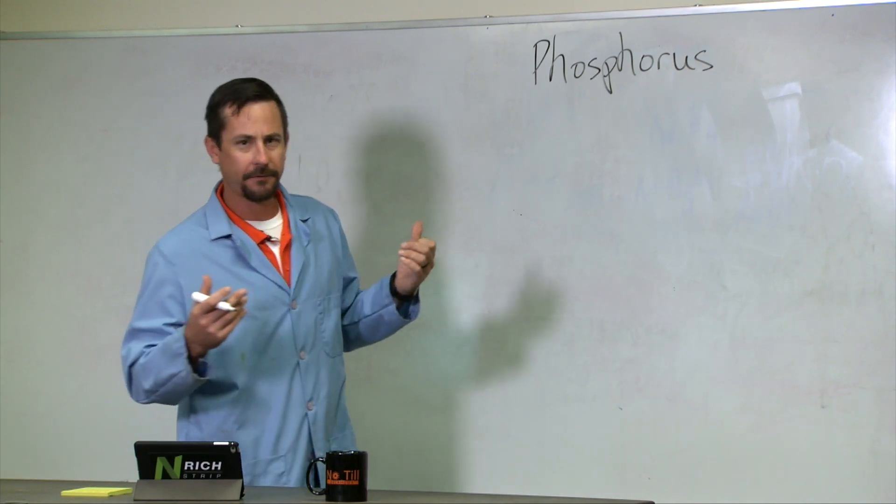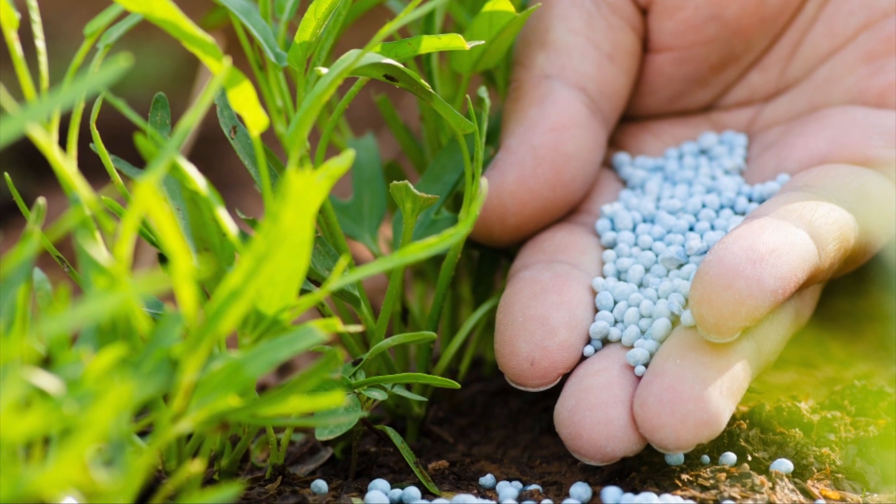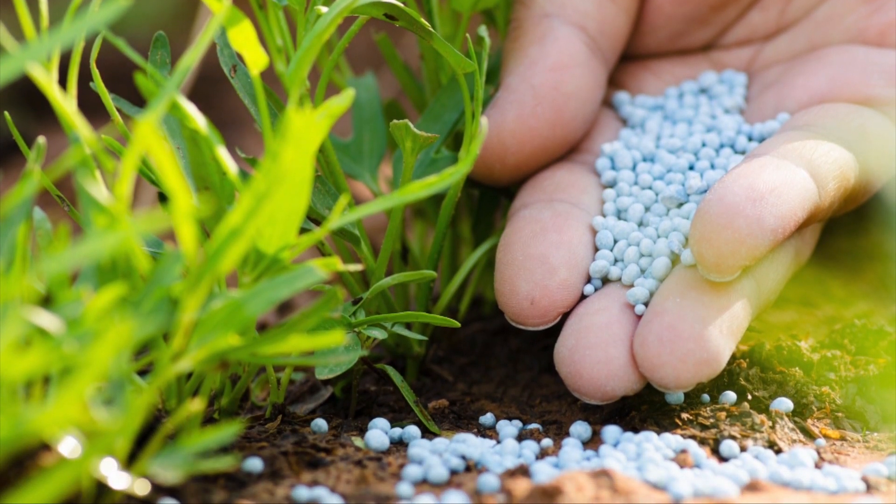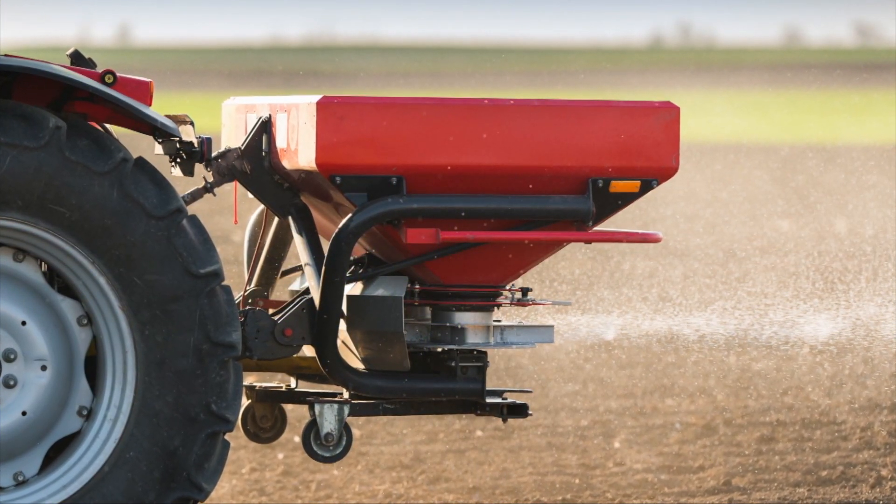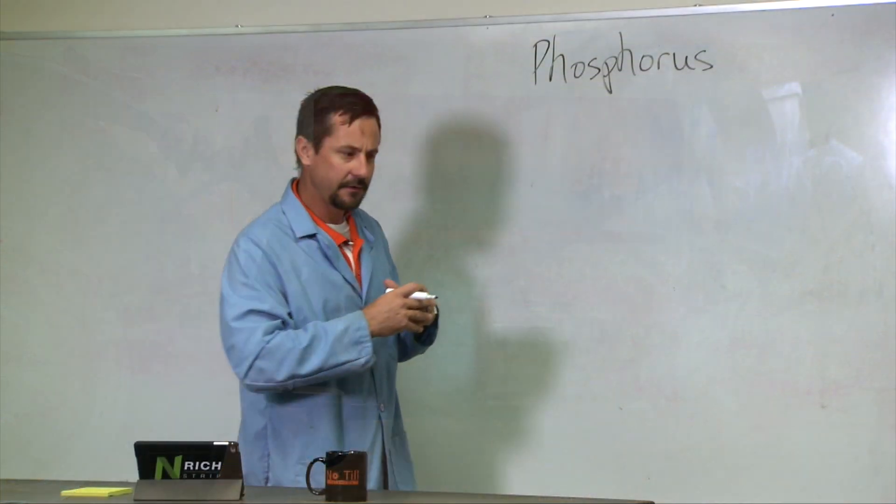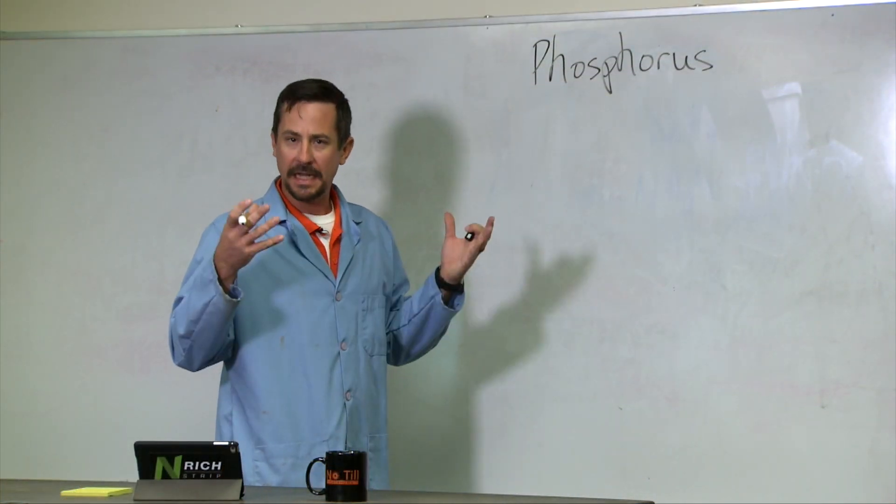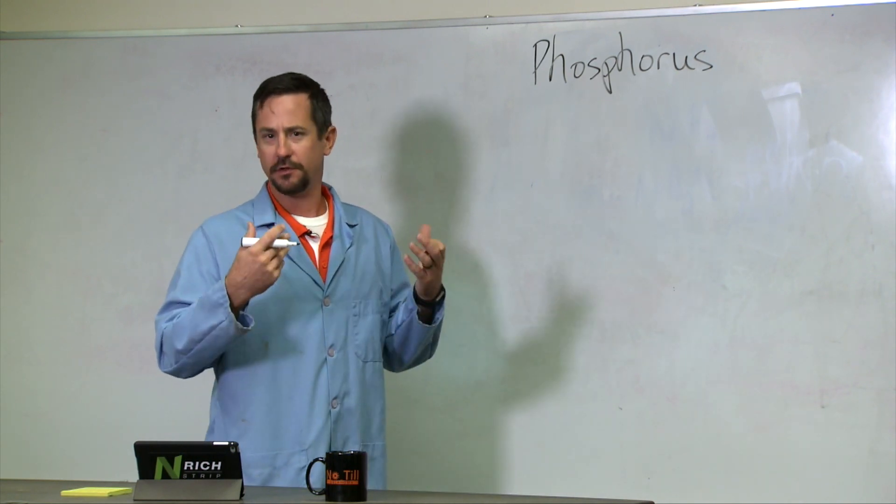Phosphorus is immobile in the soil because it's very reactive. We put phosphorus in the soil that is very available, very soluble, and very mobile—in forms like 18-46, which is diammonium phosphate.